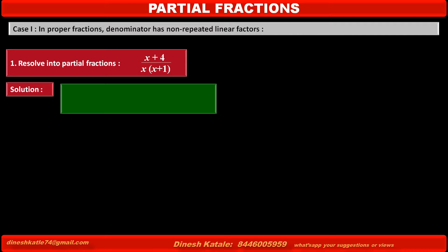The denominator of the given fraction has two factors: x and (x + 1). Therefore, by assuming A as the numerator over x and B as the numerator over (x + 1), we write: (x + 4) / [x(x + 1)] = A/x + B/(x + 1).